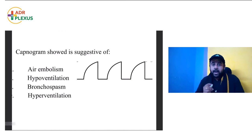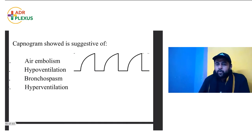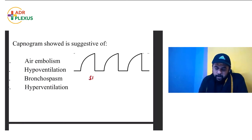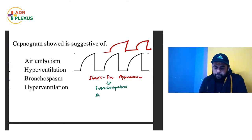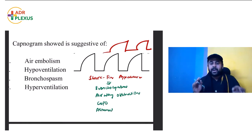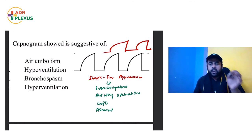Next question on capnography: the capnogram shown is suggestive of — air embolism, hypoventilation, bronchospasm, or hyperventilation. The capnogram shown has a shark fin appearance. Shark fin appearance is characteristic of bronchospasm, airway obstruction, COPD, and asthma. This is one of the most important questions you can expect, and more questions will come from capnography in future examinations.